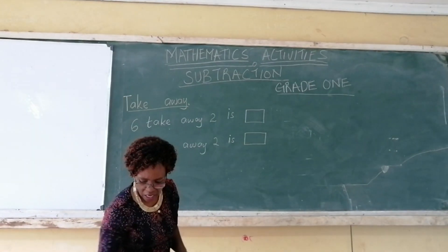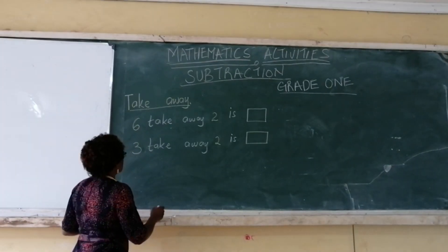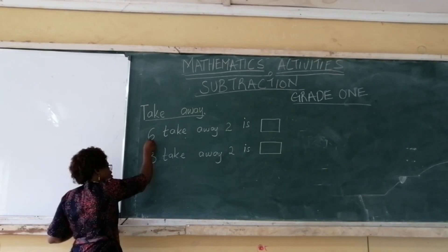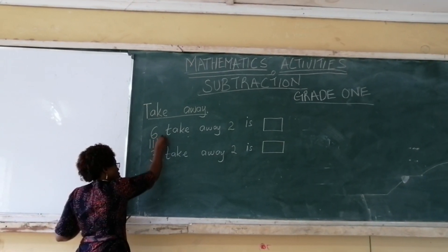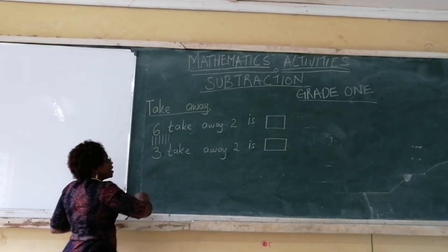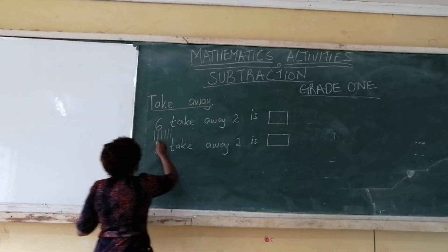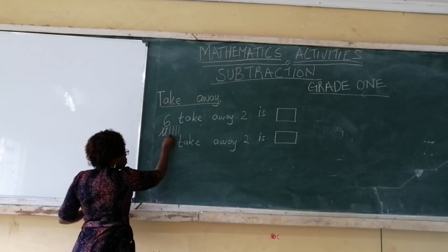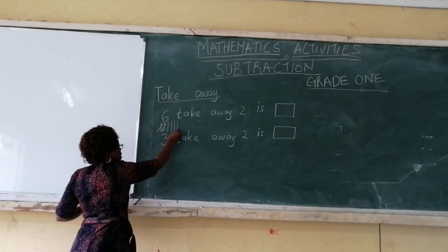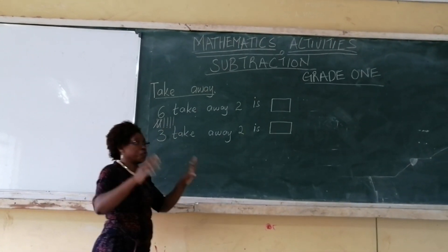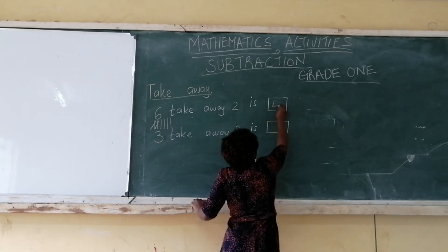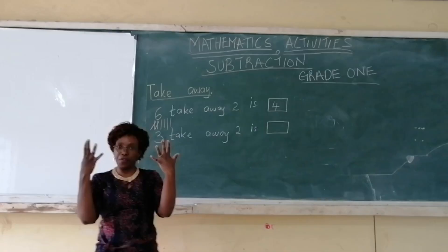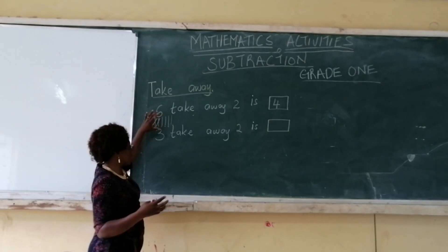We can also use sticks. We can count using sticks. This is number six — count six sticks: one, two, three, four, five, six. Take away two — cancel two: one, two. How many are left? One, two, three, four. So, whatever method you use, you will realize that the answer will be the same. You can count counters, you can count your fingers, you can count sticks.